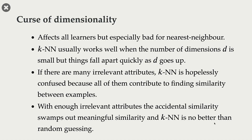So if there are many irrelevant features, KNN is hopelessly confused. With enough irrelevant features, the similarity between examples is not meaningful anymore, and KNN is no better than random guessing. And remember that in machine learning, most of the time we are dealing with high-dimensional problems.